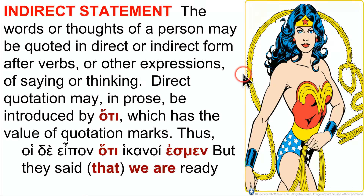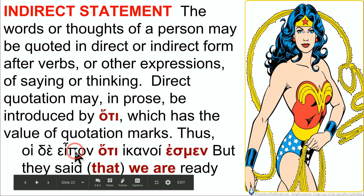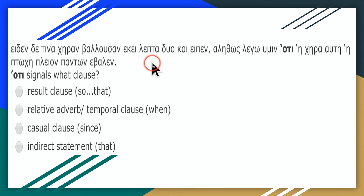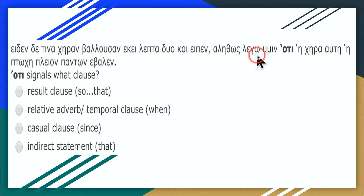We also have to worry about indirect statement, which uses 'hoti.' Hoti introduces a direct indirect statement — 'they say that.' It's subordinate to a verb of saying. So any form of saying: 'they say that we are already sufficient.' Hoti could either be a causal 'because' clause, or an indirect statement — look at the verb. 'I say truly to you' — it's subordinate to a verb of information processing: saying, deeming, thinking. So therefore it's an indirect statement.